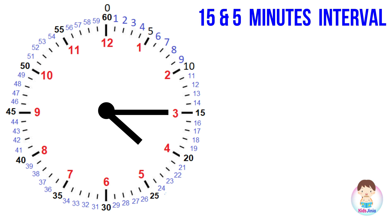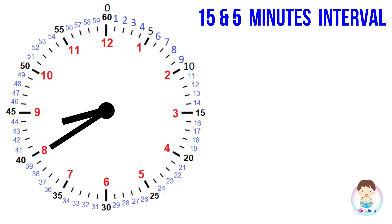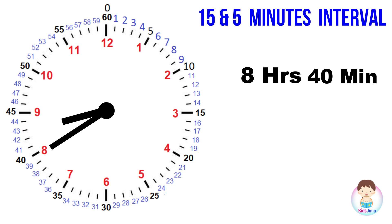Next, let's read the time in 15 and 5-minute intervals. In this clock, the minute hand points at 3 — that is the 15th mark — so it is 15 minutes. The hour hand points between 4 and 5, so the time is 4 hours 15 minutes, written as 4:15. In another example, the minute hand points at 8 — that is the 40th mark — so it is 40 minutes. The hour hand points between 8 and 9, so it is 8:40.